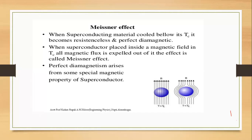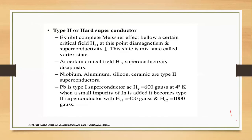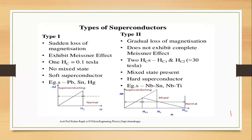Next are Type I and Type II superconductors, related to soft and hard superconductors. The basic difference is that Type I shows a sudden loss in magnetization and strongly exhibits the Meissner effect, with no mixed state formed. Type II shows a gradual loss in magnetization, and a mixed state is formed. Examples of Type I include lead and mercury.